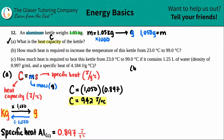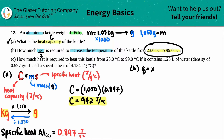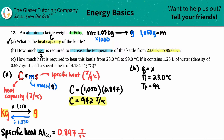Now let's move on to Part B. Part B asks: how much heat is required to increase the temperature of this kettle from 23 degrees Celsius to 99 degrees Celsius? When they ask for an amount of heat, that's a Q value, so we're solving for Q. I'm increasing the temperature, so I have an initial temp of 23.0°C and a final temp of 99.0°C.